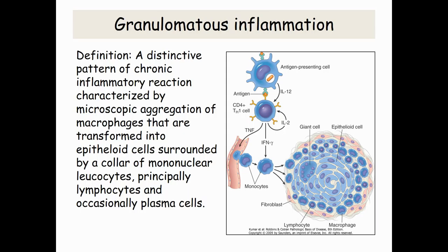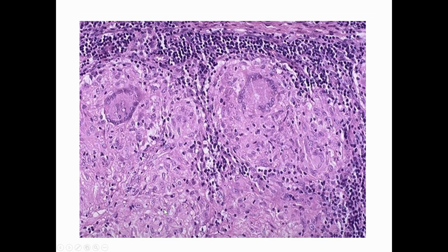Granulomatous inflammation is a distinctive pattern of chronic inflammatory reaction characterized by microscopic aggregation of macrophages that are transformed into epithelioid cells, surrounded by a collar of mononuclear leukocytes, principally lymphocytes and occasional plasma cells. This diagram shows tuberculous lymphadenitis, and here we can easily see the granuloma composed of epithelioid cells and Langhans-type giant cells.